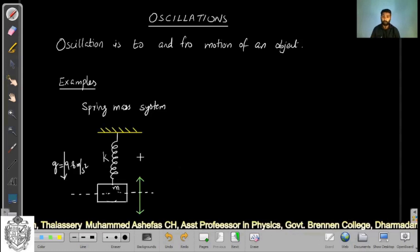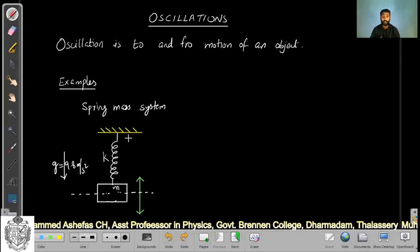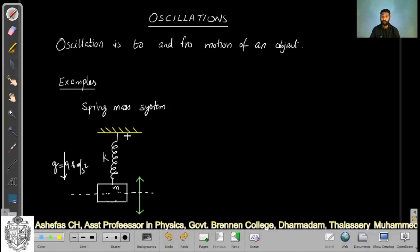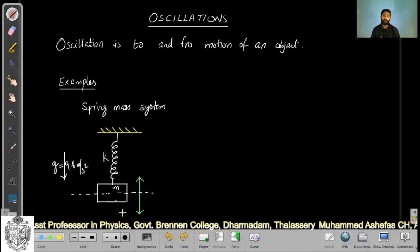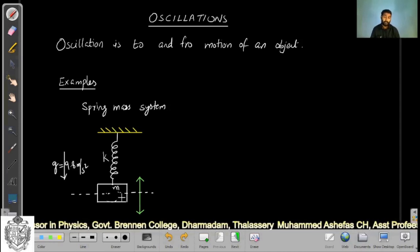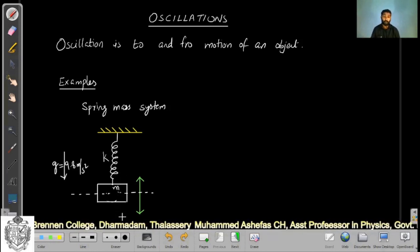One simple example is a spring mass system. Consider a mass attached to a spring which is hung on a roof. If you displace the mass slightly, maybe in the downward direction or if you push it in the upward direction, this mass will not remain there, it will start oscillating about the equilibrium position.